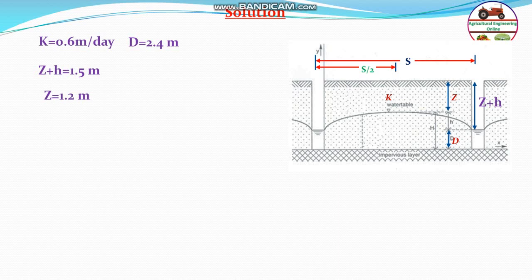Z plus H is 1.5 meter and Z is 1.2 meter. H, that is from water table to the bottom top of the drainage, that is Z plus H minus Z. H will be equal to 1.5 meter minus 1.2 meter, that is 0.3 meter.